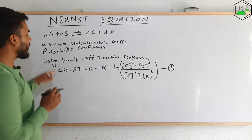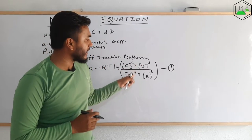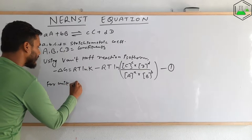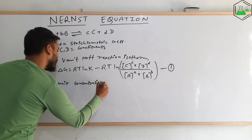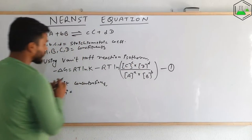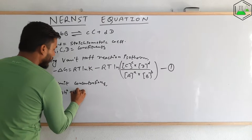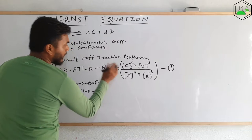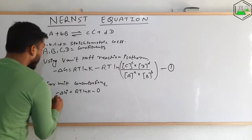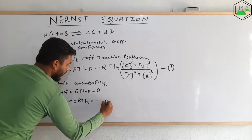Now we need to find the value of standard free energy change. To do that, we replace the concentrations by 1, since concentration of reactants and products equals 1 only at standard condition. For unit concentrations, −ΔG° = RT ln K − RT ln(1). Since ln(1) = 0, this simplifies to −ΔG° = RT ln K. This is equation number 2.